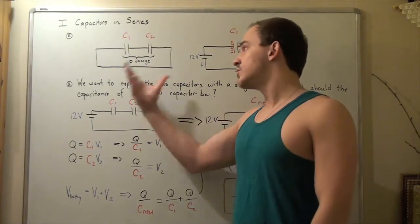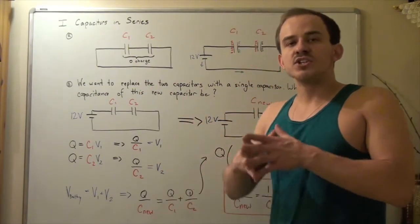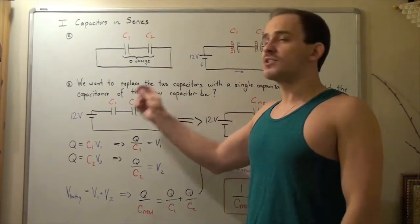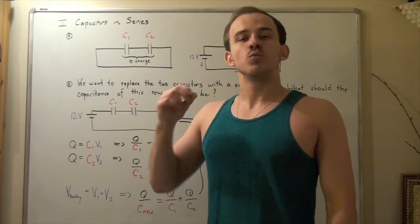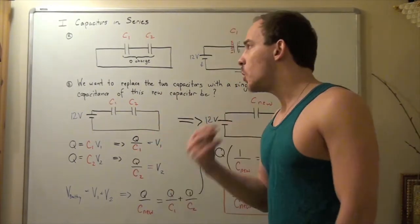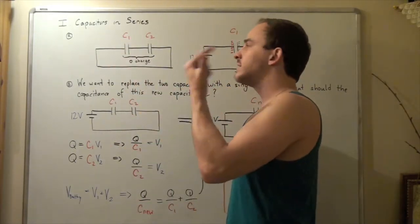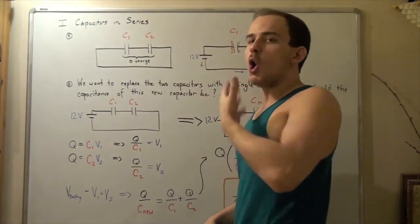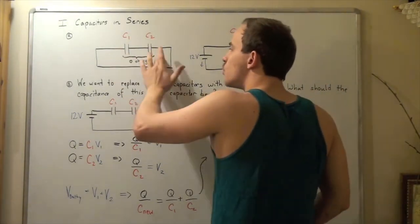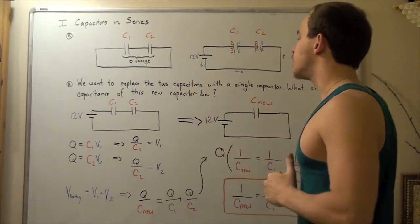Notice that in electric circuit number one, we don't have a battery. That means there is no electric potential difference or voltage difference in our electric circuit, so electrons will not flow. And because electrons will not flow, there won't be a charge buildup across capacitor number one and capacitor number two. So the overall charge on these two capacitors will be zero.